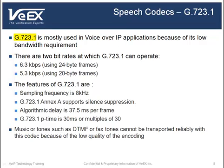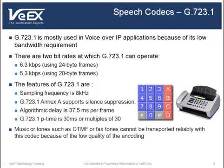Another speech codec is G723.1, which is mostly used in voice over IP applications because of its low bandwidth requirements. There are two bit rates at which G723.1 can operate: 6.3 kbps using 24-byte frames and 5.3 kbps using 20-byte frames. Like G711, G723.1 has a sampling frequency of 8 kHz. G723.1 supports silent suppression, which reduces bandwidth by stopping packet transmission during silent periods. The algorithmic delay is 37.5 ms per frame and G723.1 has a P time of 30 ms or multiples of 30 ms. Music or tones such as DTMF or fax tones cannot be reliably transported with G723.1 because of its low quality encoding.